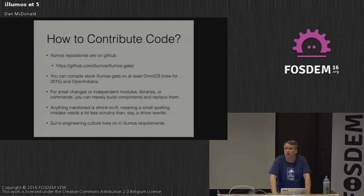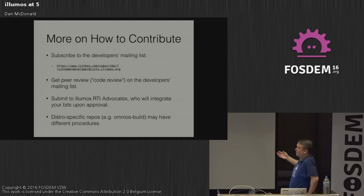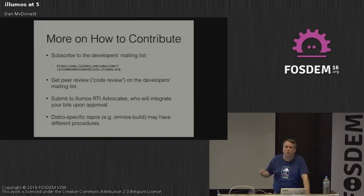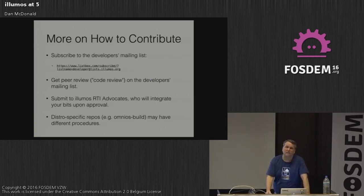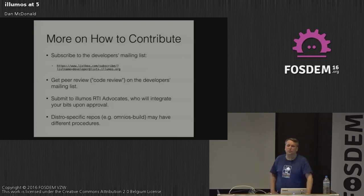Sun's engineering culture — and all the things that Illumos does — was inherited from Sun. You get on the developer's mailing list, you need code review: at least one review for something simple, two or more for something more complicated. You submit the diffs to the RTI advocates list — it's an email version of a pull request — and we will integrate your bits upon approval or kick them back. Distro-specific repos may have different rules; in OmniOS, we take pull requests on the OmniOS repos, especially in the OmniOS build which is our user land.